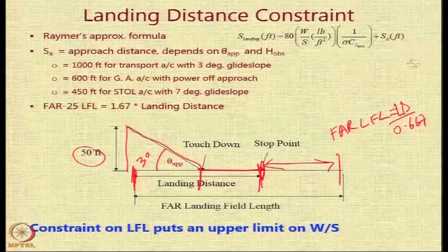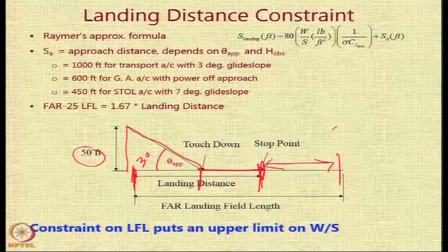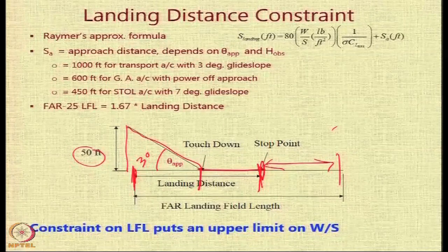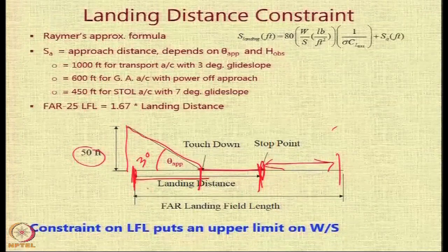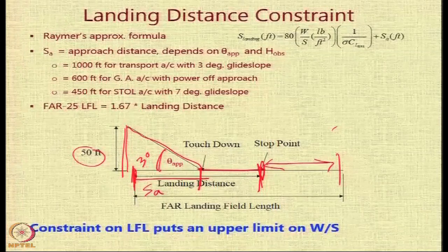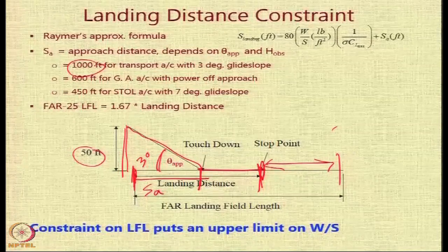Raymer has given a generic formula for estimating the landing distance in feet in terms of wing loading (in pounds per square feet), sigma (density ratio), CL_max, and SA (approach distance). The approach distance SA is a function of obstacle height and the approach angle by simple trigonometry. For a 3-degree glide slope, SA is approximately 1000 feet, which is typical for most transport aircraft.